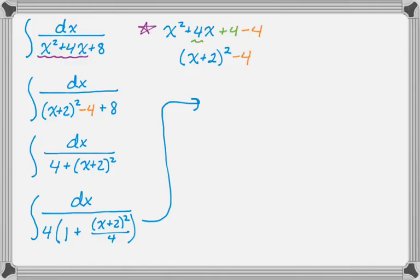So now I'm going to take out the 1 fourth, and that gives me this. And I'm actually going to rewrite this, so I have x plus 2 quantity squared over 4. I'm going to rewrite that as x plus 2 over 2, the whole quantity squared. And now it's looking a lot like arctan.